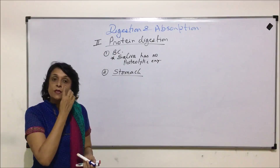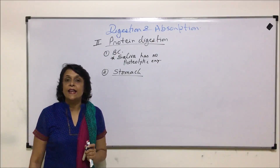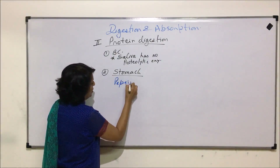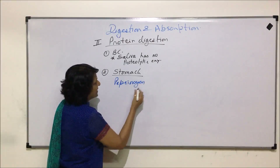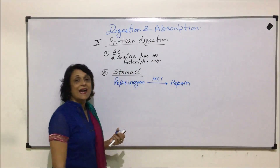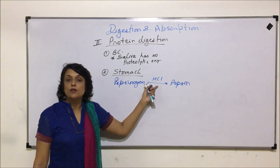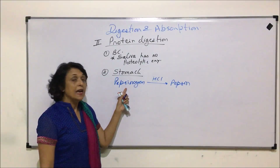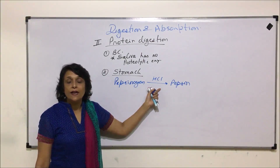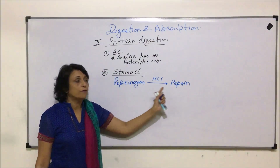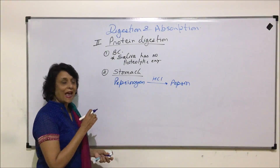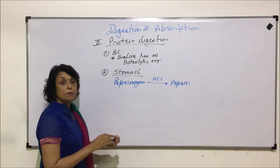The next location is the stomach. The stomach contains two main protein-digestive enzymes, but both are in their inactive state and need to be activated first. The first is pepsinogen, which gets activated into pepsin with the help of hydrochloric acid. HCl helps in activation of pepsinogen into pepsin and also provides the optimum pH required for the action of these enzymes.